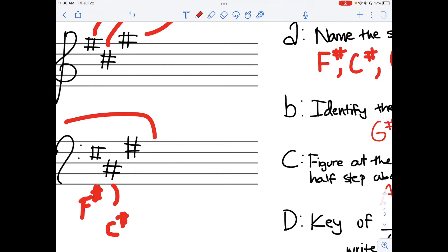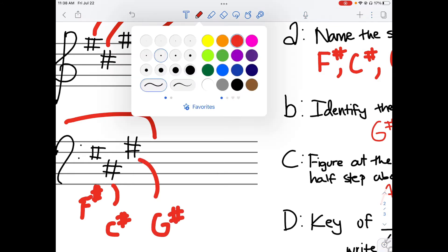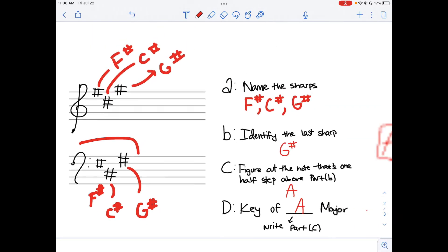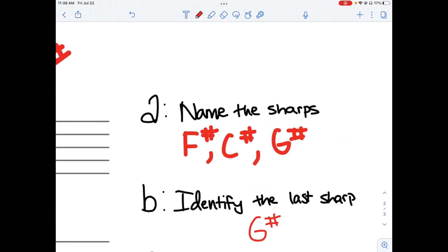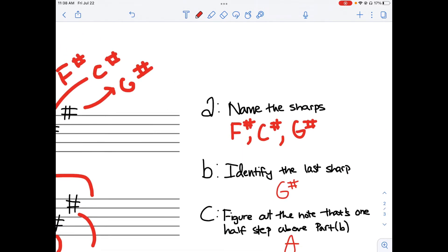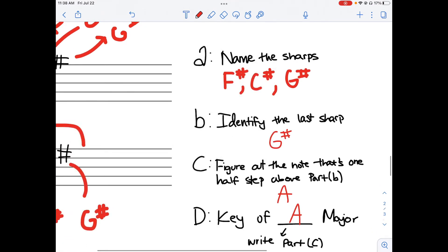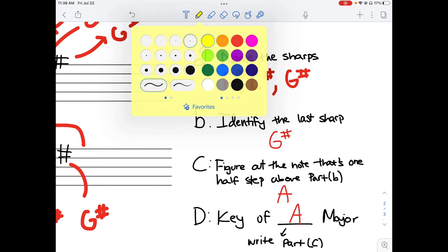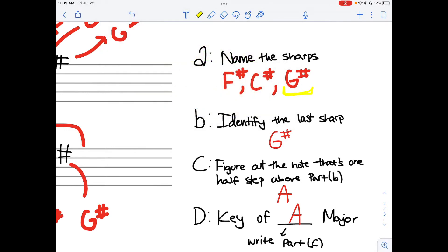Then you identify the last sharp. So in this case, it would be the G sharp, so we identify the G sharp. Next, we find the note that's one half step above the G sharp. So if we remember from our previous videos,